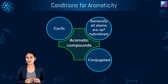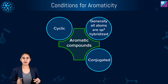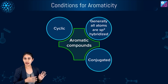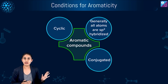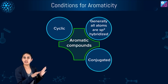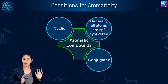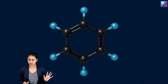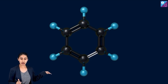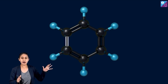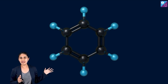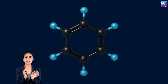The third condition is a conjugated system — double, single, double, single, double, single. This is a conjugated system where two double bonds are separated by a single bond. Conjugation is not restricted just to pi bonds; there can be conjugation of a lone pair with a double bond, or a carbocation with a double bond. In benzene, you can see perfect conjugation of three pi bonds — each separated by a single bond.